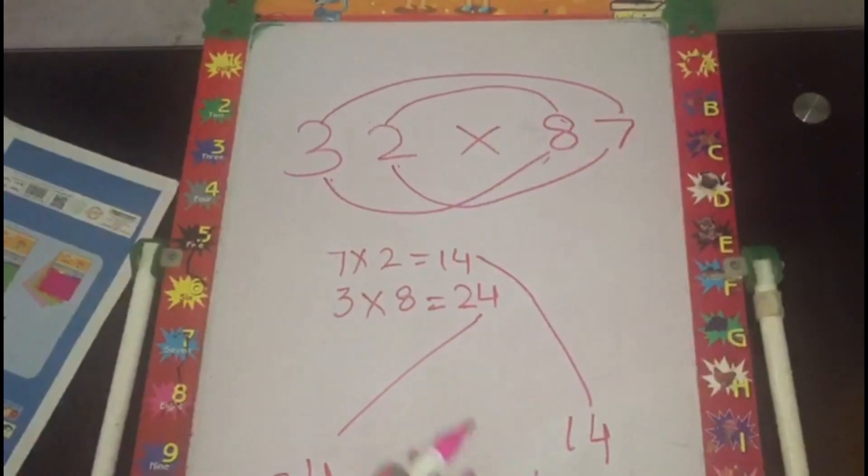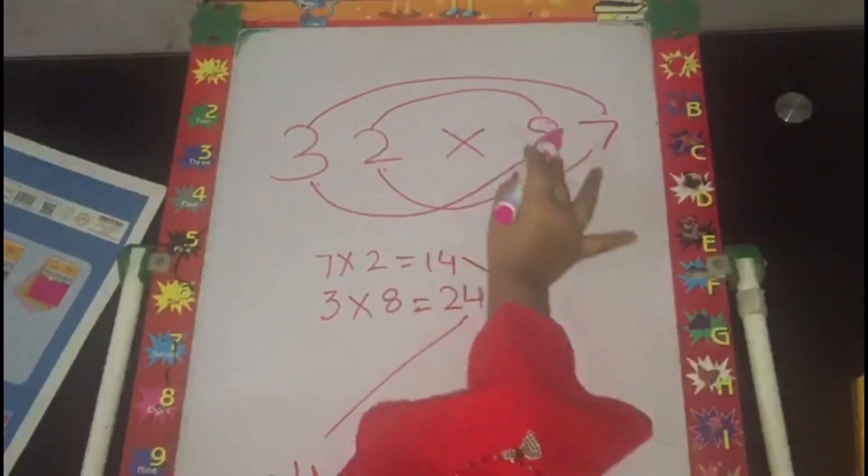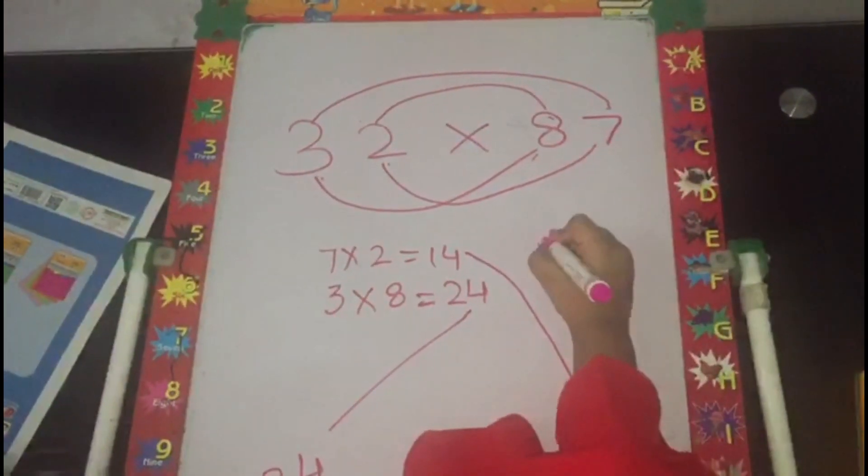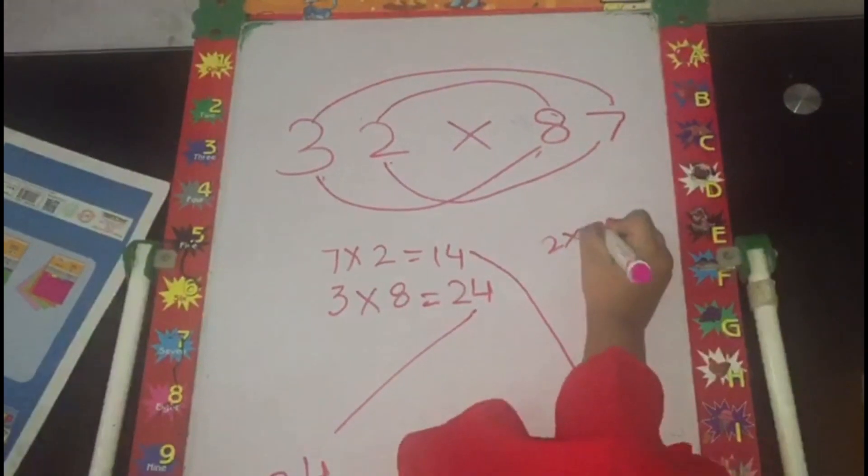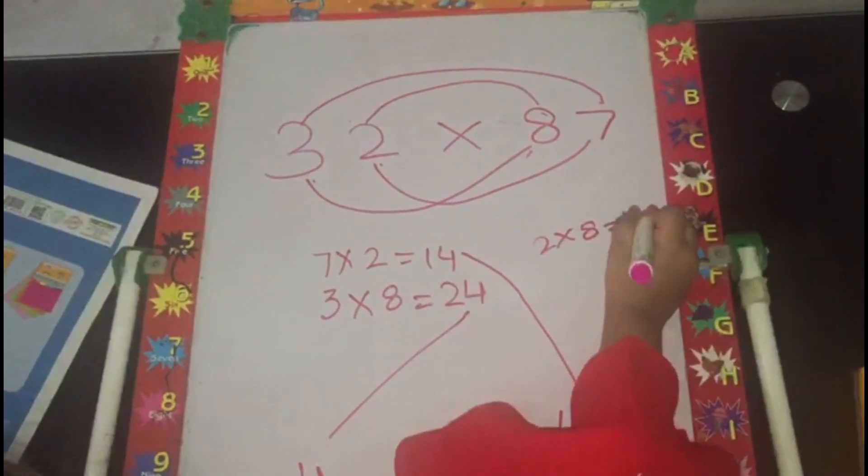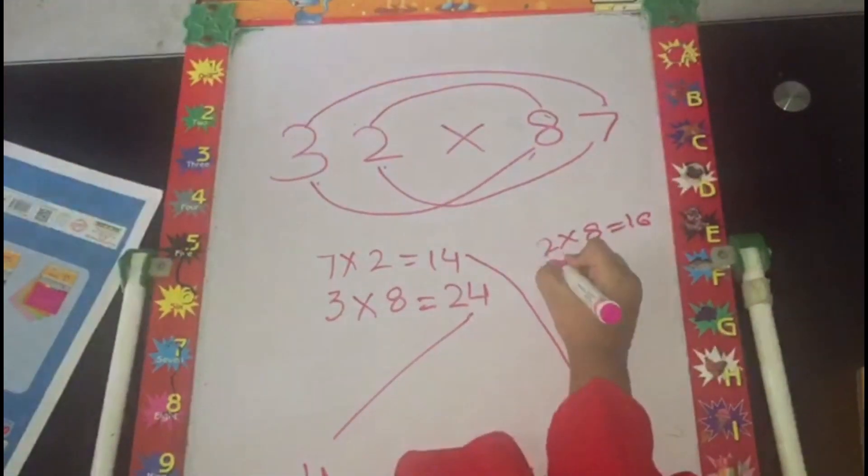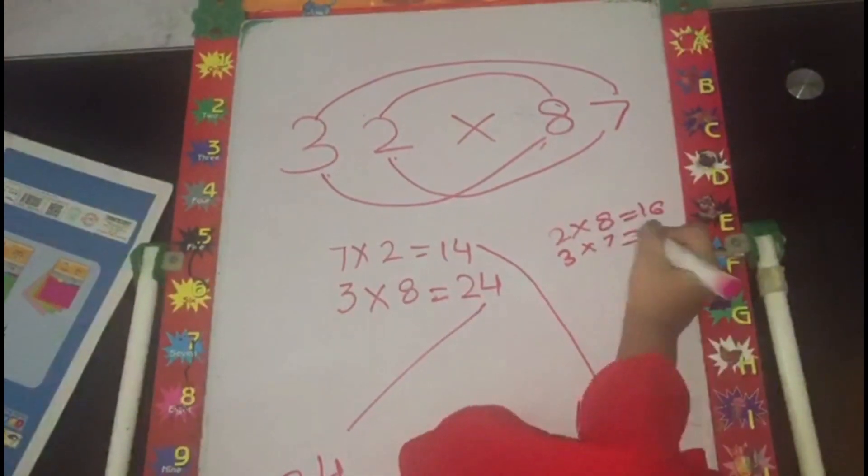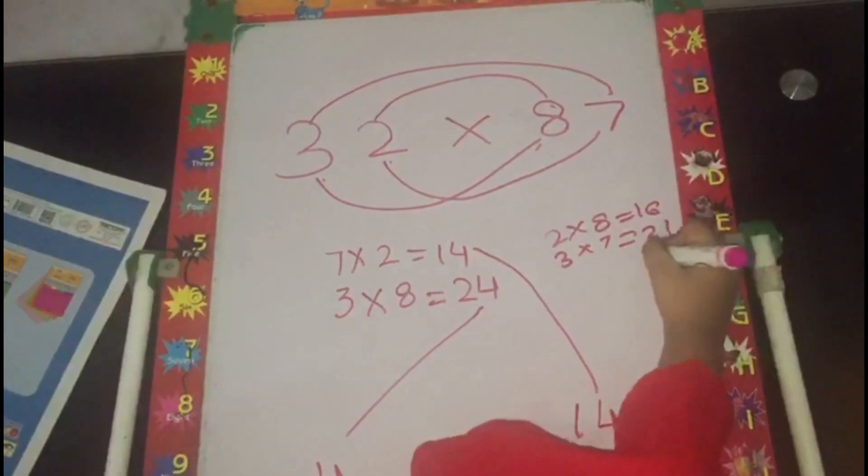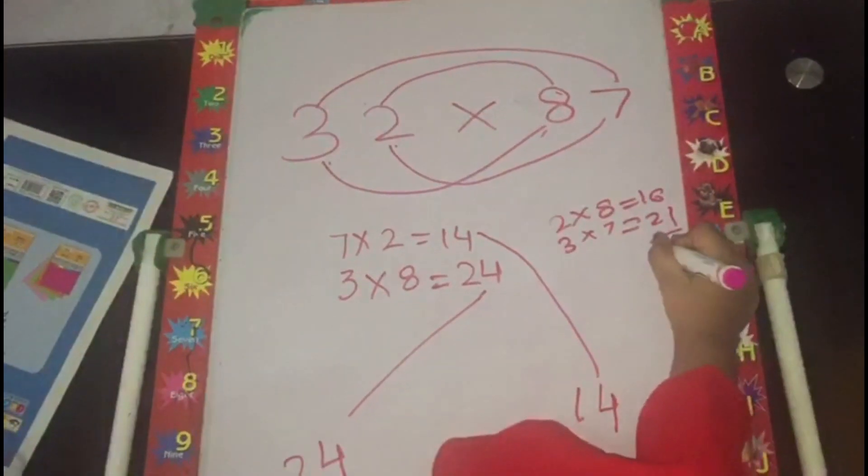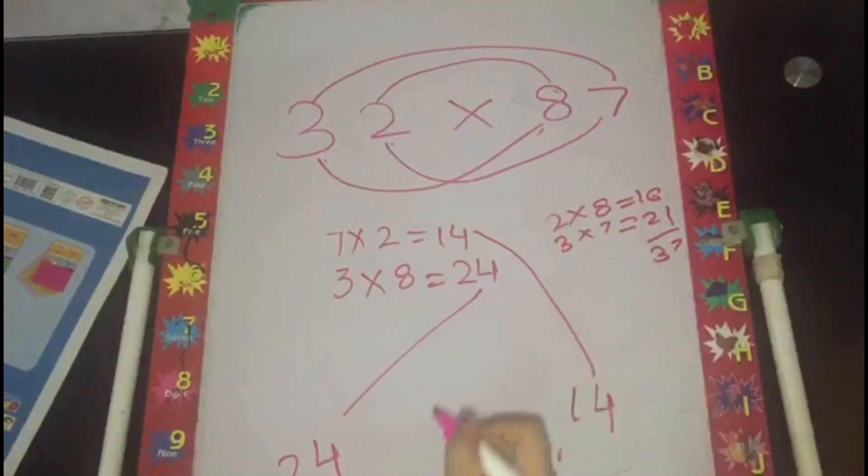Our next step will be a rainbow multiplication. 2 multiplied by 8, and 3 multiplied by 7. Add these two numbers. We have 37.